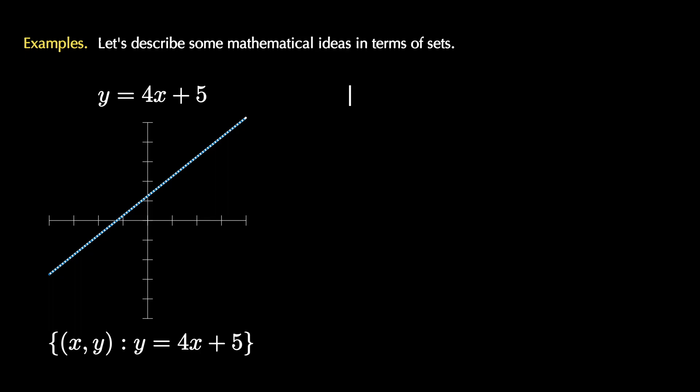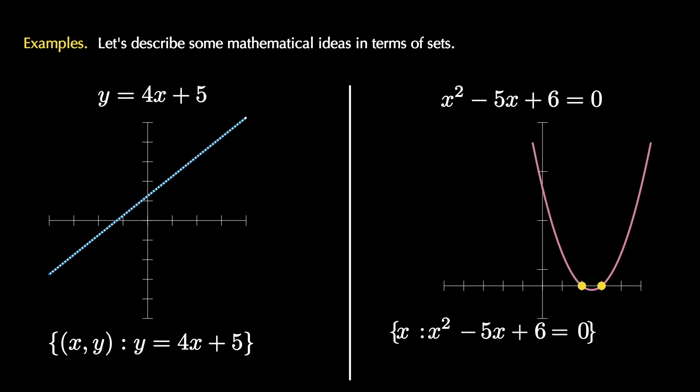That means the equation y equals 4x plus 5 becomes the predicate of the set in question. Another algebraic question is to solve the equation x squared minus 5x plus 6 equals 0. We know this has a graphical interpretation, but what we're looking for is the x values where this graph crosses the x axis. We see that there are two such points. Therefore, we're looking for the collection of all x such that x squared minus 5x plus 6 equals 0. And in this case, this is just the set containing the numbers 2 and 3.